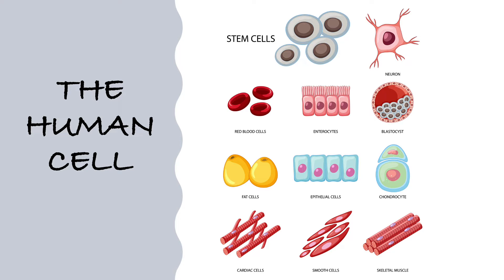And then we have epithelial cells, which make up the linings of your skin and the linings of your blood vessels. We have here chondrocytes, which are your cartilage cells. And then we have here the muscle cells, which include the cardiac muscle cells found in your heart, your smooth muscle cells which could be found in your digestive system, and then the skeletal muscle cells which are attached to your bone.